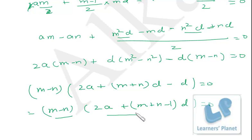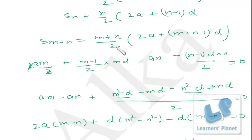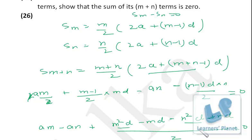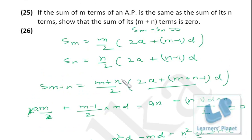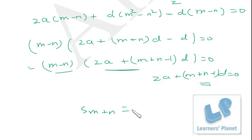Now either (m−n) = 0 or [2a + (m+n−1)d] = 0. But m−n cannot be 0, because if m = n then the statement 'sum of m terms equals sum of n terms' would be meaningless. Therefore [2a + (m+n−1)d] = 0. So S_(m+n) = (m+n)/2 × 0 = 0. That is what we had to prove.